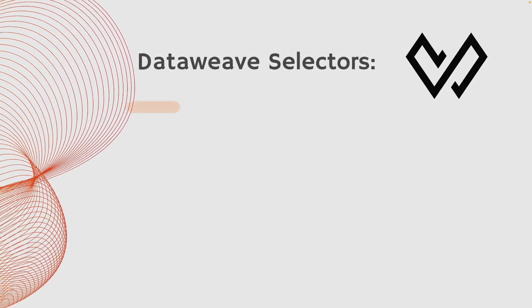What are the different kinds of DataWeave selectors? We have five in all: single value selector, index selector, range selector, multi-value selector, and descendant selector. Let us deep dive into each one of them.